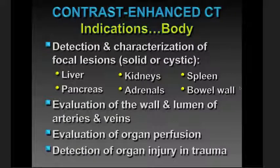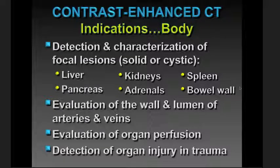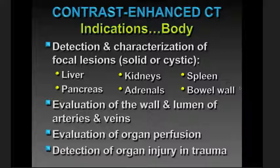Let's first of all look at indications for doing abdominal CT. One of the reasons that we rely on CT to do the imaging of the abdomen and pelvis is for the detection and characterization of focal lesions — not only solid lesions in solid organs, but even cystic lesions as well, primarily in the liver and the pancreas, which are particularly challenging. Also in the kidneys and the adrenals, which are a little easier in general.